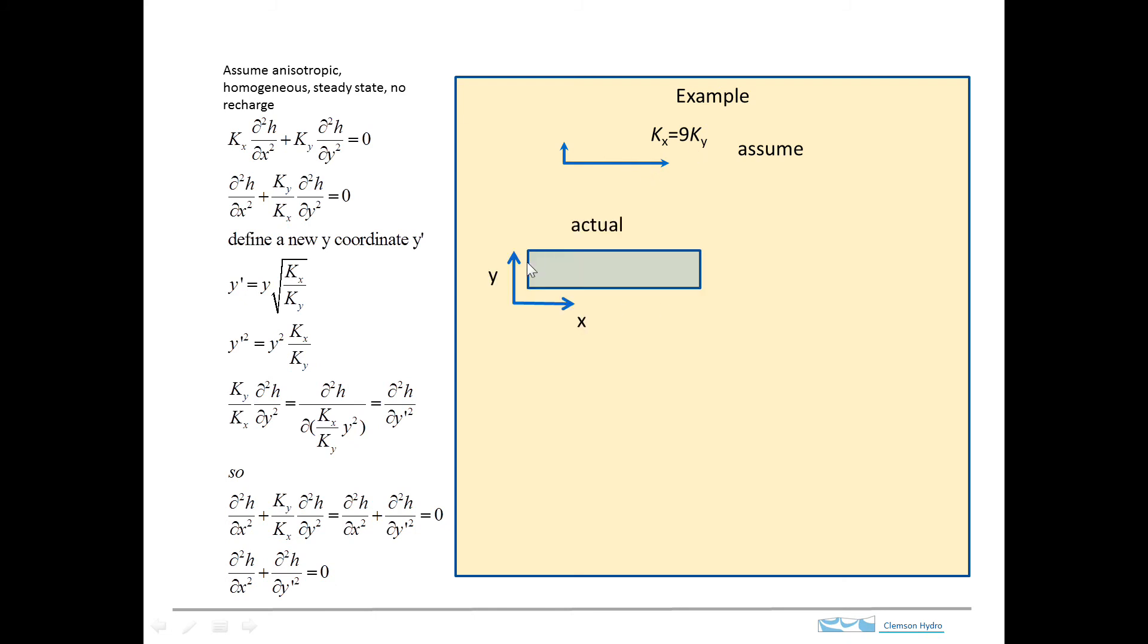Kx is nine times greater than Ky. So here's the region that we're interested in, and we might imagine that there's a constant head boundary right there and a constant head boundary right there. So we would have a flow system that goes like that.